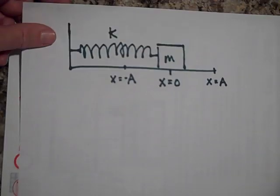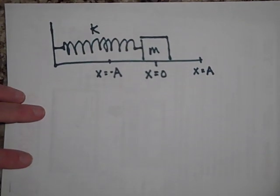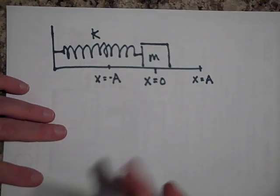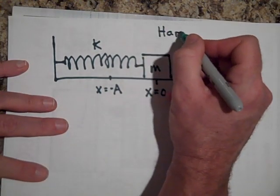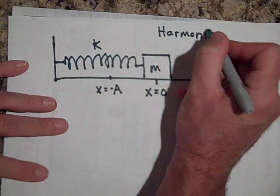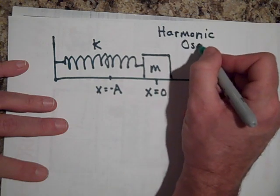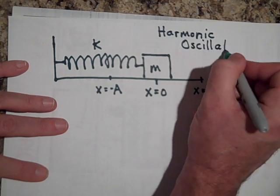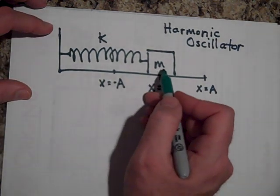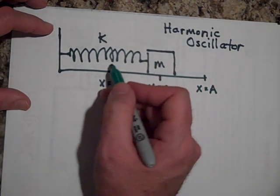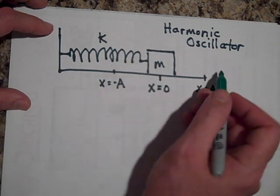Okay, so here we have the same system. This has a name. This system is called a harmonic oscillator. That's the fancy name for it. And if we pull this back and let go, it's gonna swish back and forth in simple harmonic motion.